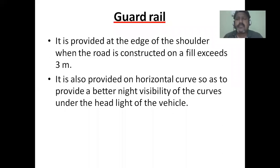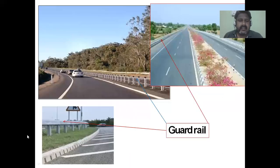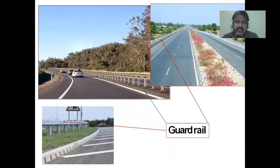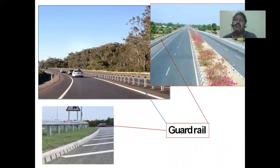Looking at photographs: these are the guard rails. All these elements — kerb, shoulders, bus bays, cycle tracks, footpaths, guard rails — are small features but each has an important role. Now you will recognize all these features when you go out on roads and highways.